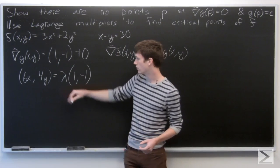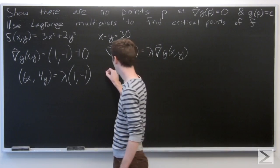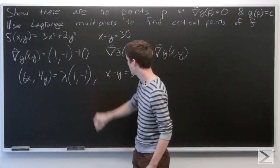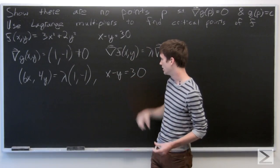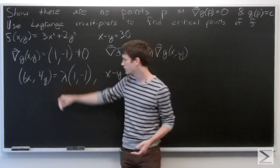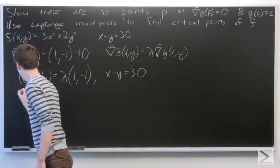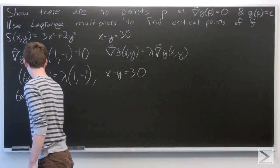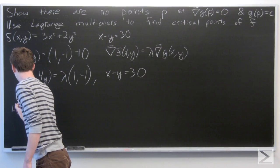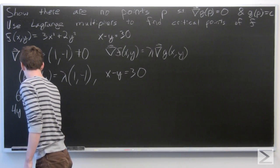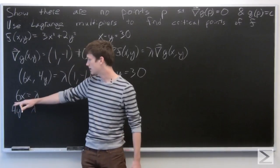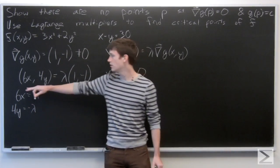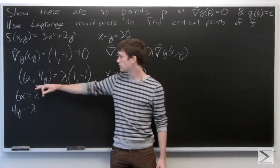We want to satisfy that condition and x minus y equal to 30. Setting the components equal to each other, we create two equations: 6x = λ and 4y = -λ.